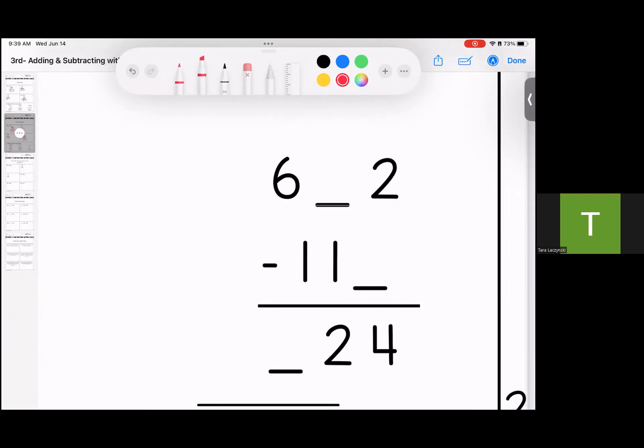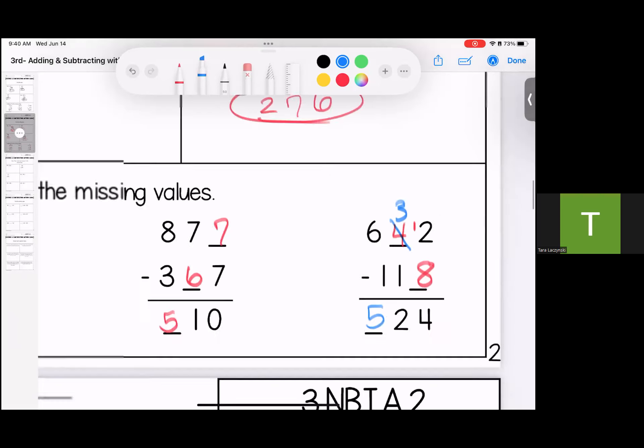Last one. 2 minus what gives me 4? Now, this one I had to really think, because I was going to have to borrow, I know that much. 12 minus 8 gives me 4. Now, over here, I need it to be a 2, but I had to borrow from it. So if I did 3 minus 1 it would be 2, but since I had to borrow, I needed to make it a 4. And then 6 minus 1 is 5. 642 minus 118 leaves me with 524.